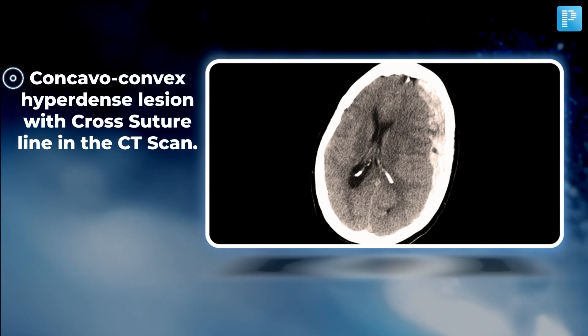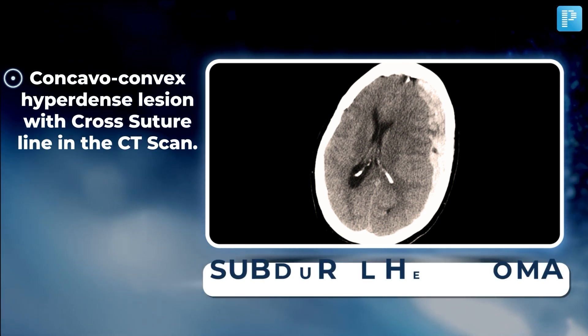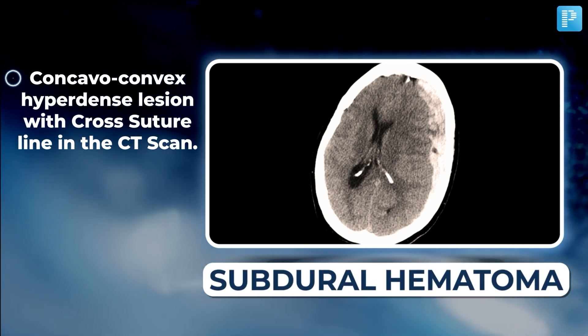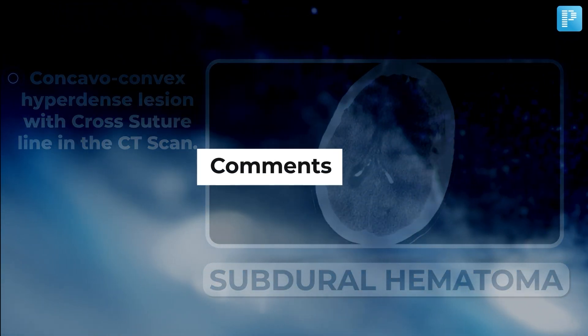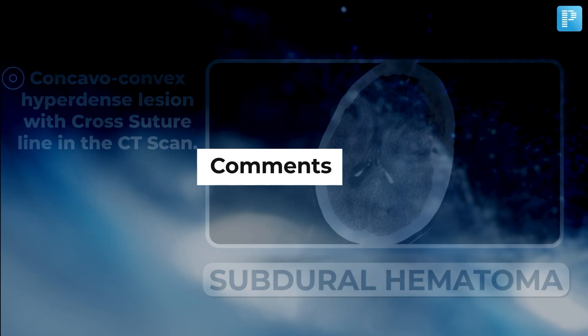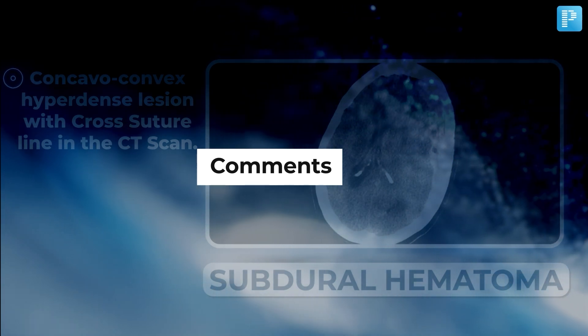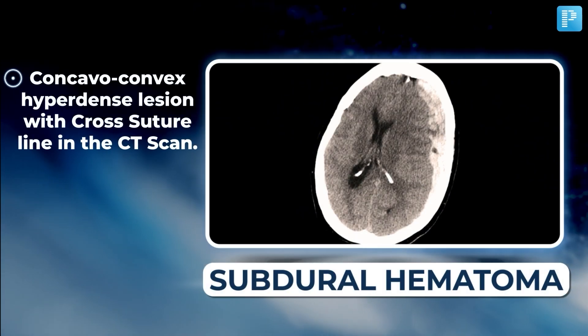Next in line shows a concavo-convex hyperdense lesion crossing the suture line in the CT scan. The disease here is subdural hematoma. Let us know in the comments if there are other diseases that also associate with these findings.